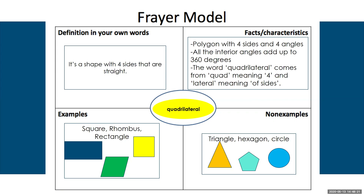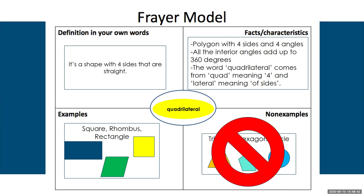In our non-examples, we have some additional shapes that, when we look at the facts and characteristics, don't quite match up. A triangle only has three sides and three angles; a hexagon has five sides, and so on. This is a great place to talk through that process with the student. We don't want anything in our non-examples that are way off — like drawing a watermelon or a unicorn — we want to keep it to things that don't quite meet the facts and characteristics.